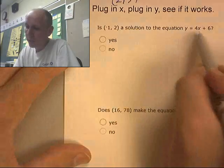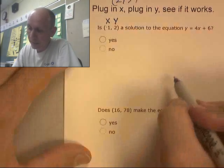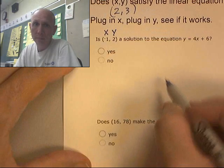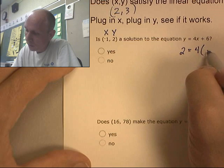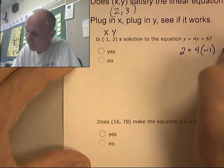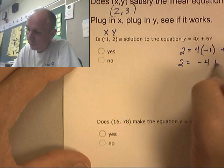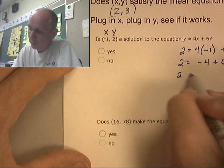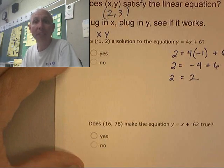Is (-1, 2) a solution to this? Well, that's x, and that's y. Plug it in. y, 2 equals 4 times x plus 6. 2 equals negative 4 plus 6. 2 equals 2. Yes, that is a solution.